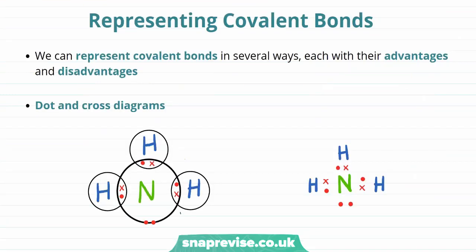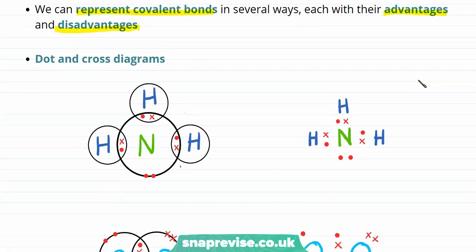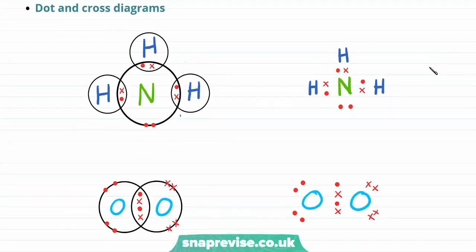Just like with ionic bonds, we can draw out covalent bonds in several ways, and each of these ways of drawing out covalent bonds have their advantages and disadvantages. The first method is the one that we used over the page when drawing the covalent bond formed between two chlorine atoms, and this is a dot and cross diagram.